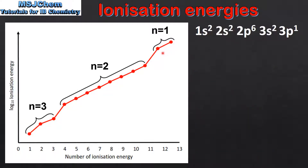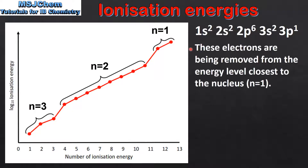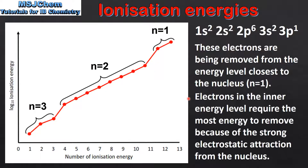Next we look at the electrons in the third section. These electrons are being removed from the energy level closest to the nucleus. Electrons in the inner energy level require the most energy to remove because of the strong electrostatic attraction from the nucleus. Once again we see the larger increase in ionization energy between the electrons removed from the second main energy level and those removed from the first main energy level, providing evidence for the existence of energy levels within the atom.